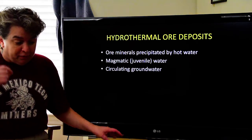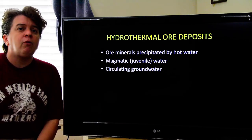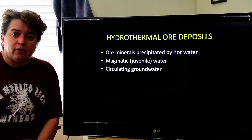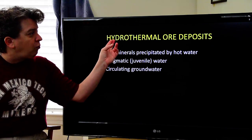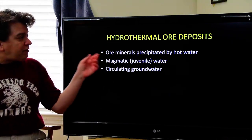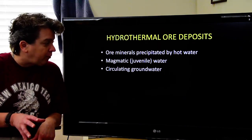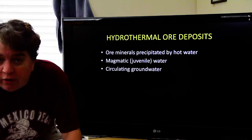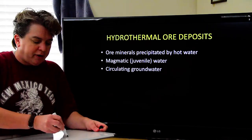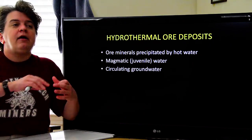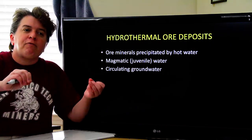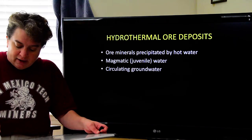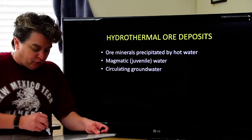Those were the igneous ore deposits. But there are other ways ore deposits form — hot water creates a lot of them. We call these hydrothermal ore deposits: hydro meaning water, thermal referring to heat. In this case, the ore minerals are precipitated by hot water. Hot water holds more material in solution than cold water does, and as this hot water circulates underground and moves away from a heat source and starts cooling off, the dissolved minerals will precipitate out.